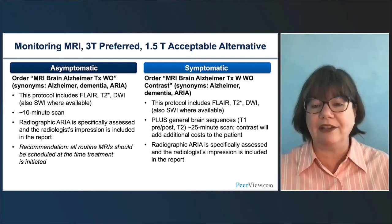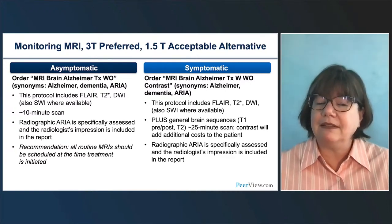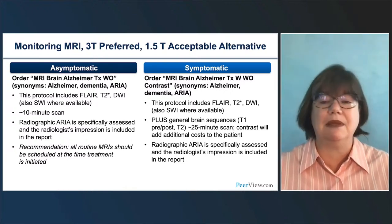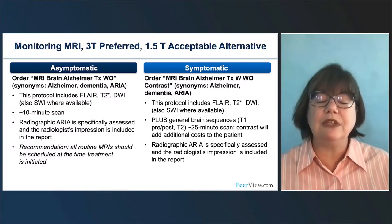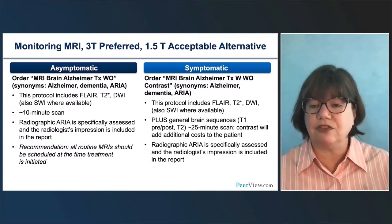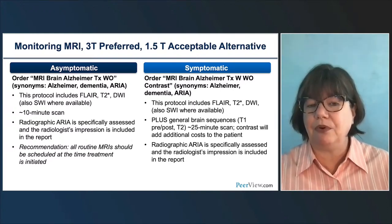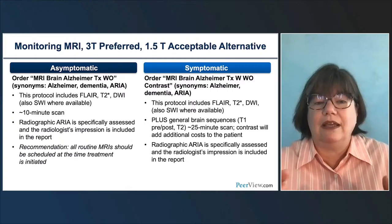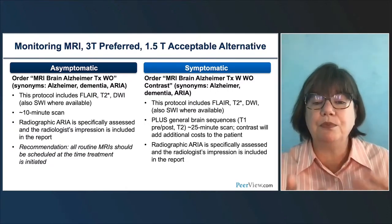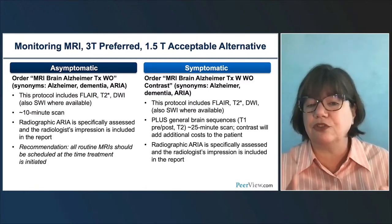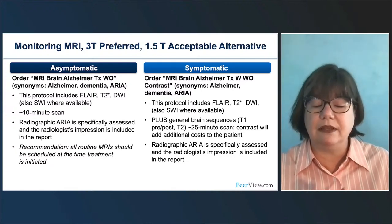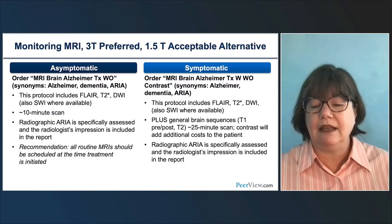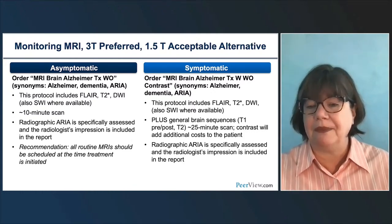If they're symptomatic, we do an enlarged protocol. If they're having symptoms like headache, dizziness, confusion, or GI symptoms, you have a broad differential diagnosis and need a full brain MRI. We actually recommend contrast just as you would for any symptomatic patient, but make sure the consistent monitoring sequences are embedded in that protocol so you can compare apples to apples. That full symptomatic protocol takes closer to 25 minutes. For both asymptomatic and symptomatic patients, it's really important to call out and specifically report ARIA findings.